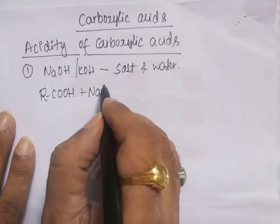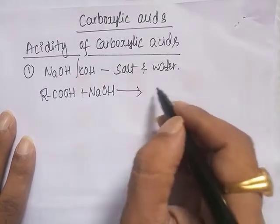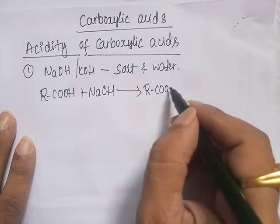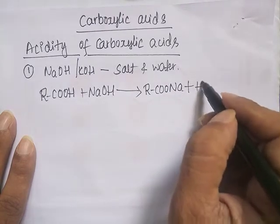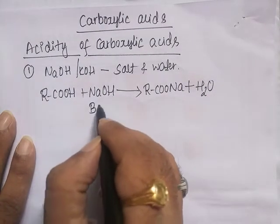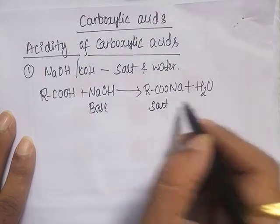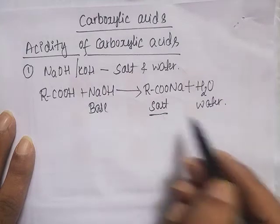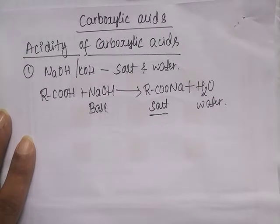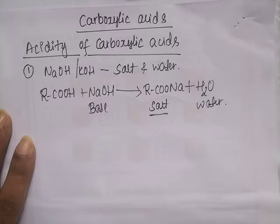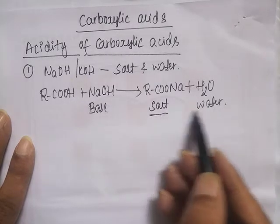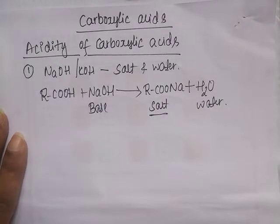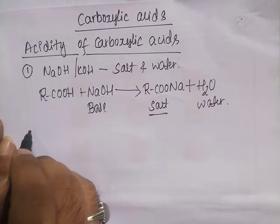Carboxylic acid plus a base like sodium hydroxide forms the sodium salt of carboxylic acid plus water. Salt is formed when a base reacts with an acid. When acid and base react, they give salt and water.